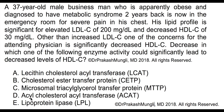Option D is acyl cholesterol acyltransferase, or ACAT. This enzyme is found in the liver and other tissues and is a cytoplasmic enzyme — it is not in the blood vessels and has nothing to do with HDL cholesterol. Option E is lipoprotein lipase, which is located on the endothelial surface and is responsible for metabolism of chylomicrons and VLDL. Again, it has nothing to do with HDL cholesterol metabolism. By ruling out B to E, we are left with option A.